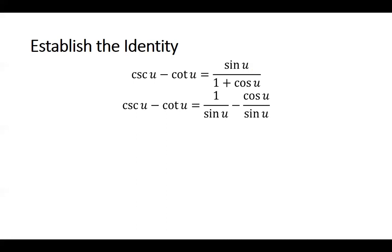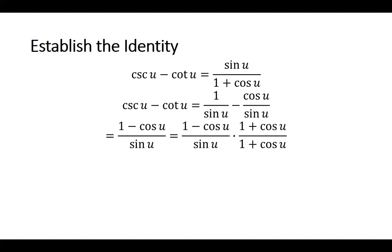So I'm going to say cosecant u minus cotangent u equals: cosecant u is 1 over sine u, and cotangent u is cosine u over sine u. I used a reciprocal identity and a quotient identity. So I rewrote cosecant u as 1 over sine u and cotangent u as cosine u over sine u. Now I have a common denominator, so I can subtract: 1 minus cosine u over sine u.